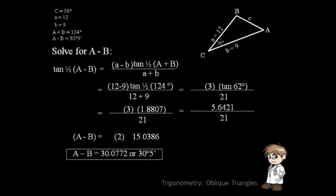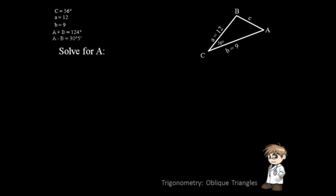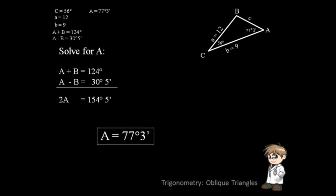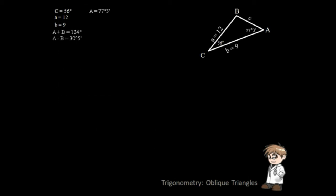We will now get the value of angle A. Simply arrange A plus B and A minus B and add the values. After adding the values, you will get 2A and the sum of the two values. Divide the answer by 2 and you will get angle A. To get the value of angle B, simply subtract angle A from A plus B.